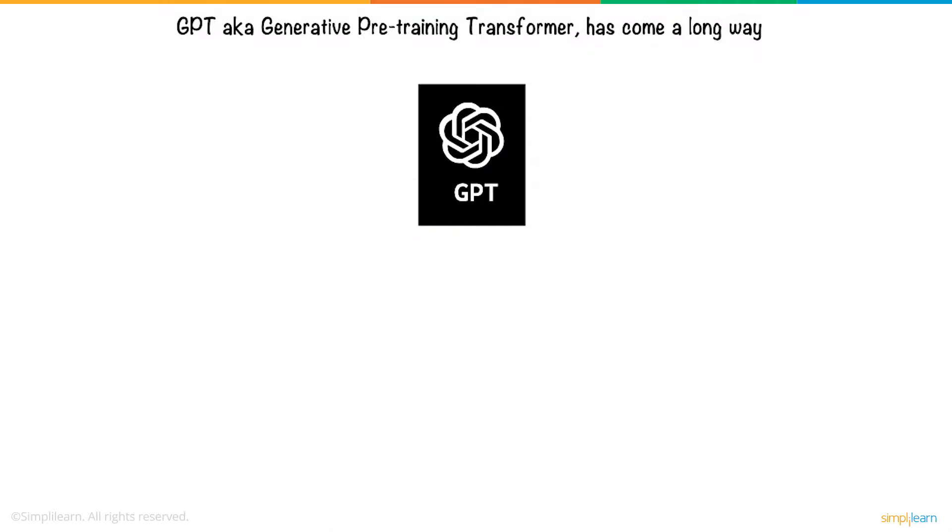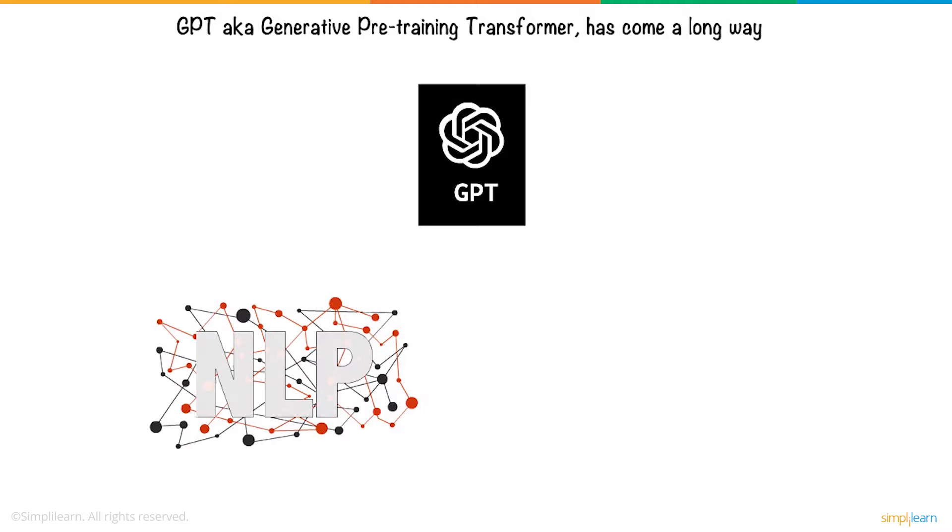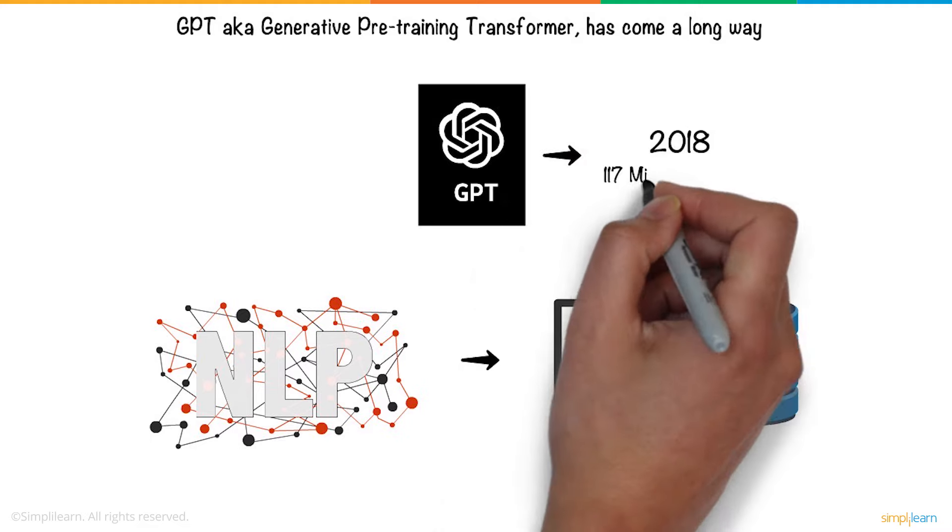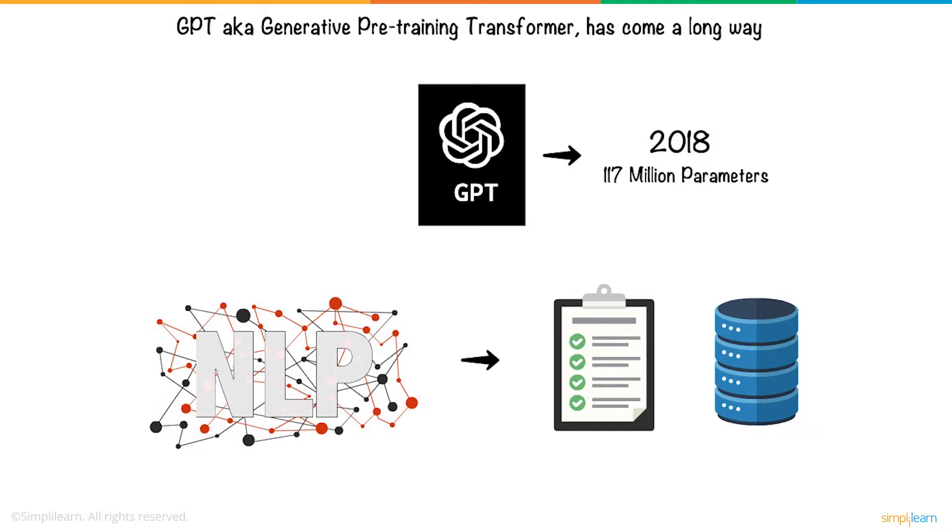Before the introduction of GPT, natural language processing used to deal with a specific task with large amounts of data. GPT was first released in 2018, which contained 117 million parameters.